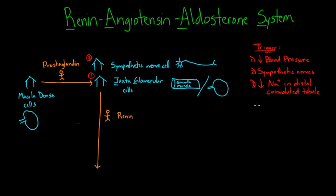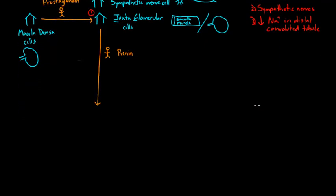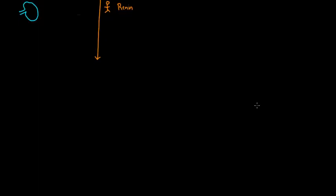These are the three major triggers for renin release. Now this is all happening in the kidney, right? That's where all this action is occurring. But there are other organs involved in blood pressure control as well.